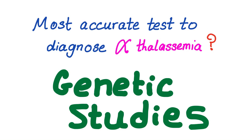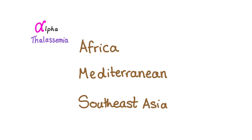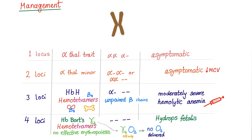What's the most common or most accurate test to diagnose alpha thalassemia trait or alpha thalassemia in general? It's genetic studies. That's the most accurate. Alpha thalassemia is present in African, Mediterranean, and Southeast Asian population.